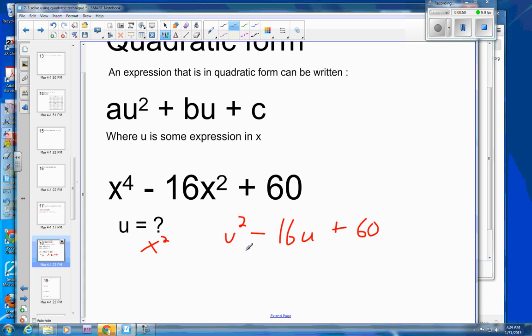Now if you don't want to use the u's, then this would mean that this was x squared squared, minus 16x squared plus 60, where you still have this being to the second power, this term being to the first power, and no variable on the third one.